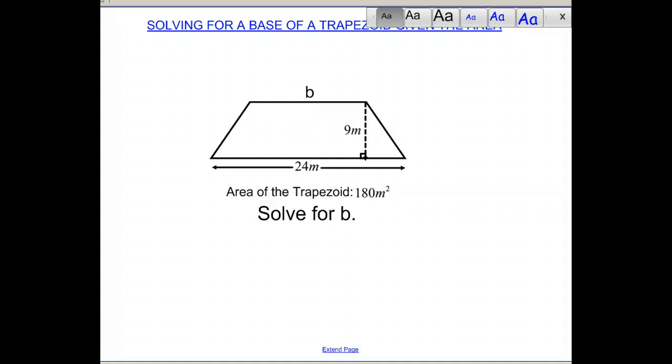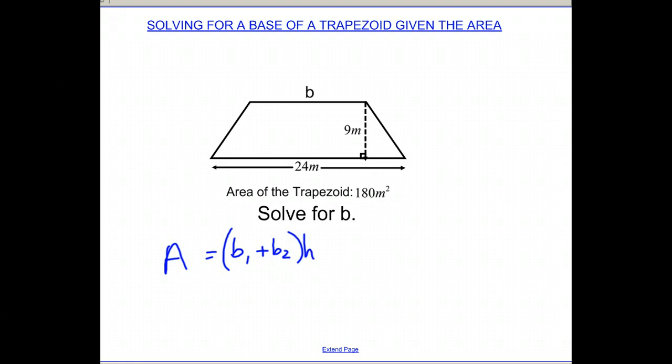First thing you want to do is remember the area formula for a trapezoid. So we have area equals base 1 plus base 2, multiply it all by the height, and divide the entire thing by 2. And this we've been working on for a while.